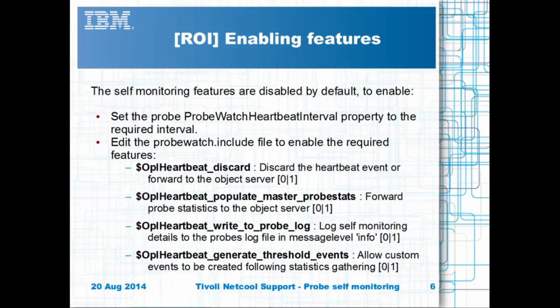The self-monitoring settings are set to disabled by default. In the probe's property file, enable the probe watch heartbeat interval by setting it to a suitable value such as 60 seconds. Edit the probe watch include files as required. If you have never used the feature before, it is best to enable every sync and then turn off anything that is not required. Zero is off and one is on. Review the online manual to determine how best to use the custom statistics.